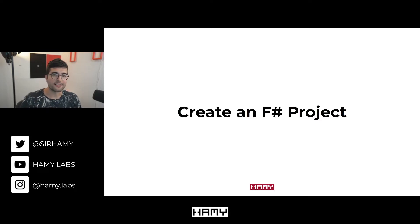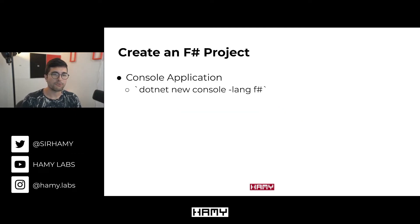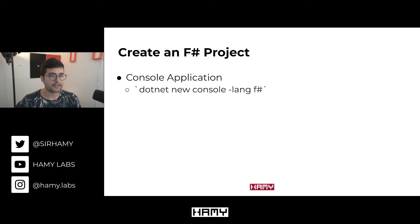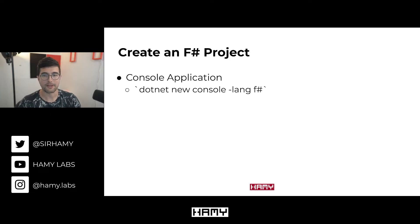Once you have the .NET SDK on your machine, we can go ahead and create our first F# project. We're just going to be building a console application, which is the lightest weight application we can do — super simple, basically just two files. To create it, we use the .NET command: `dotnet new console --lang fsharp`. The `--lang` flag is really important here because if you don't specify F#, it will just create a C# project, and we don't want that.